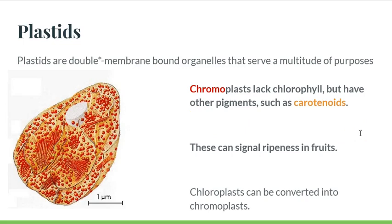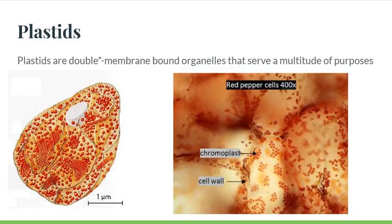Tomatoes form shards of carotenoids and don't have nice distinct plastids, so look for chromoplasts in red peppers instead. They should look like this — they are very tiny, generally smaller than chloroplasts, and often clustered together or clustered around the nucleus when you look for them.